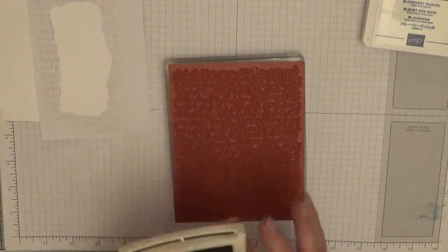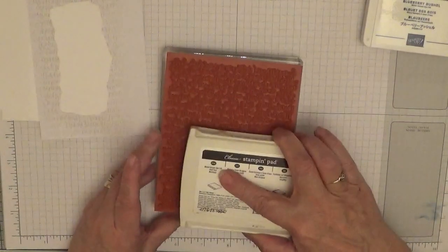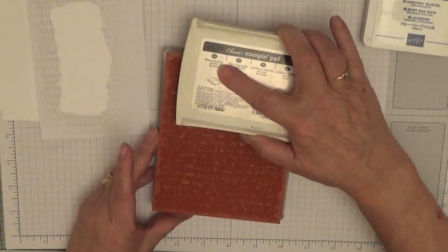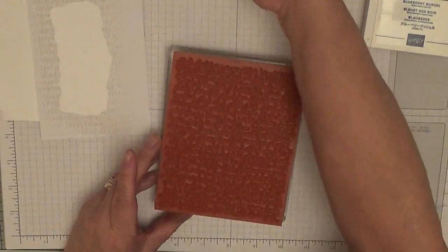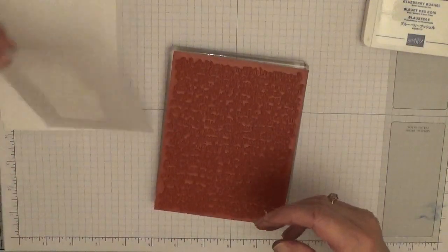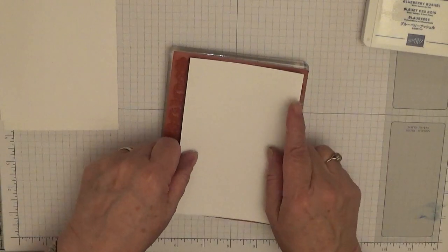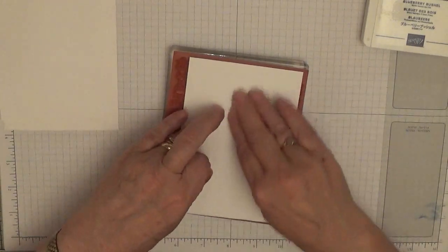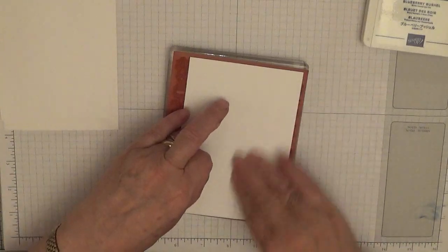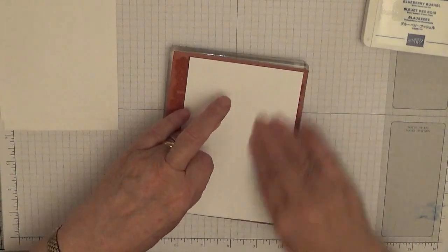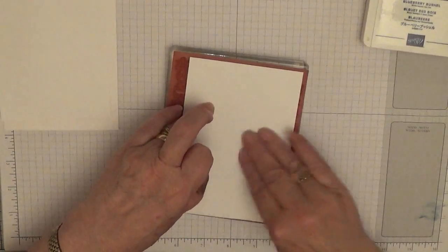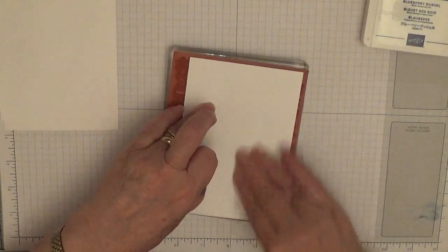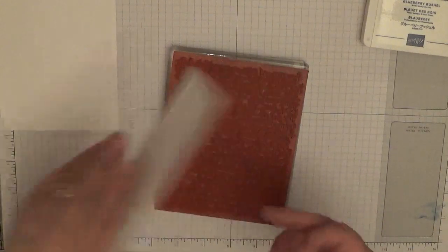And we're going to use Crumb Cake. And I know my Crumb Cake needs re-inking but I'm not doing it until after I've done this card. And we're just going to rub it on and lift it off.